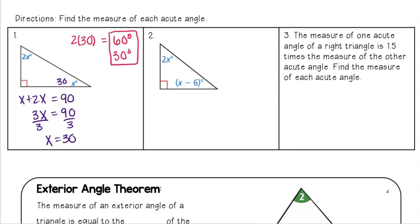I can check my work: 60 plus 30 does in fact equal 90. Let's try the same thing with this problem. Again, I have a right triangle, so that automatically means these two angles are complementary, so they add up to equal 90.